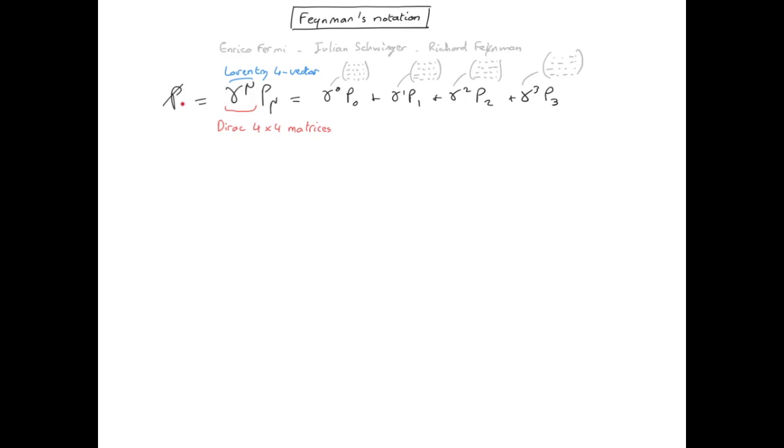Whenever you see a p slash, a slash, b slash, this is a really short notation of something which has many components because we have a sum of four by four matrices. Also, the Feynman notation is not limited to standard four vectors; you can also have it for the covariant derivative. It's quite common to express the Dirac equation and the Dirac Lagrangian with this notation.